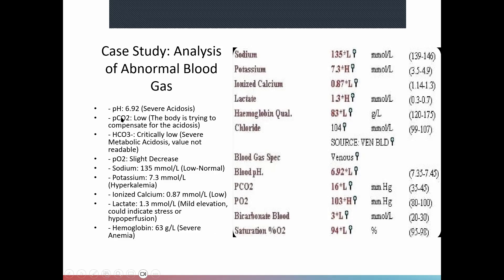In this case, the patient has a pH of 6.9 — quite severe acidosis. Once you start getting below 7 it is quite severe. The PCO2 is low, so it's not a respiratory acidosis. The bicarb is extremely low — a value of 3 — indicating a metabolic acidosis that the body is trying to compensate for. The patient may have shallow rapid breathing or very deep breathing to blow off CO2.